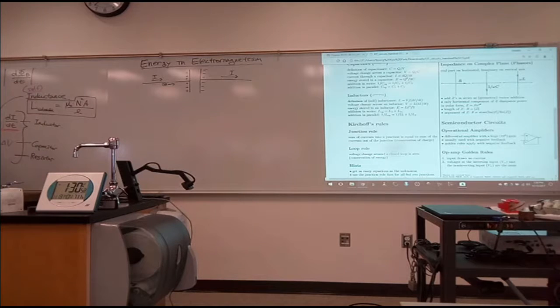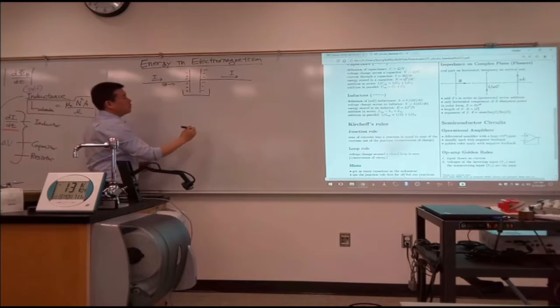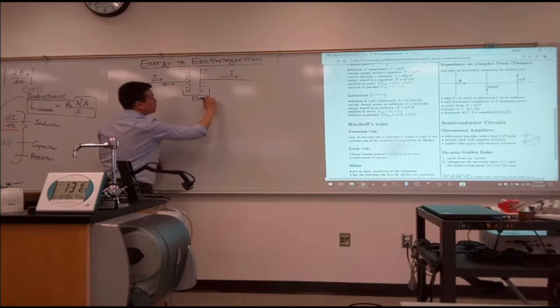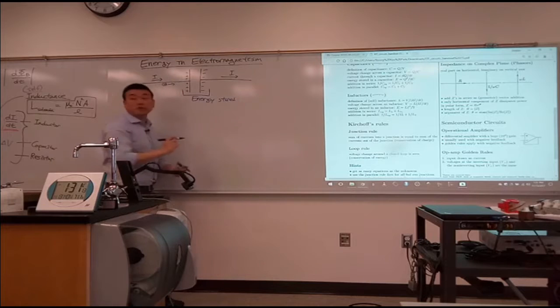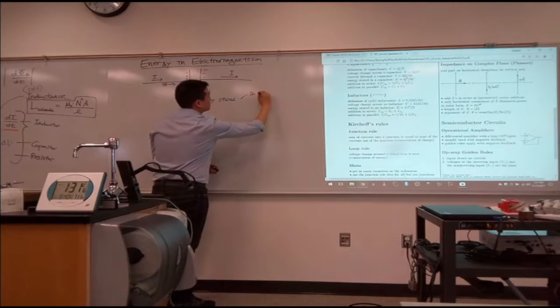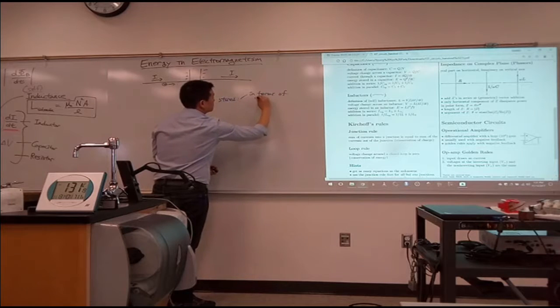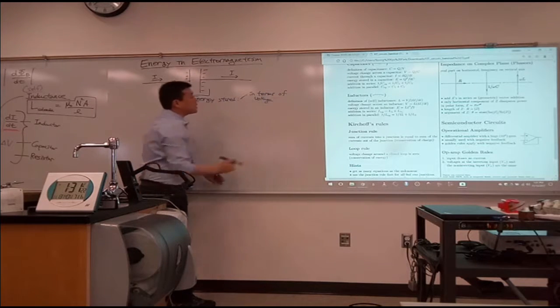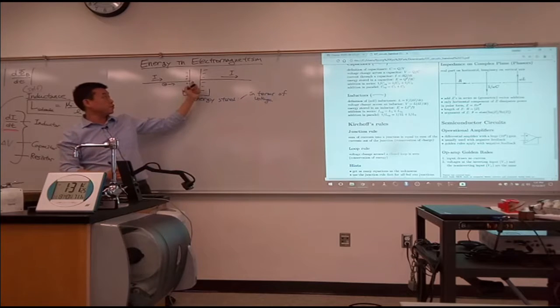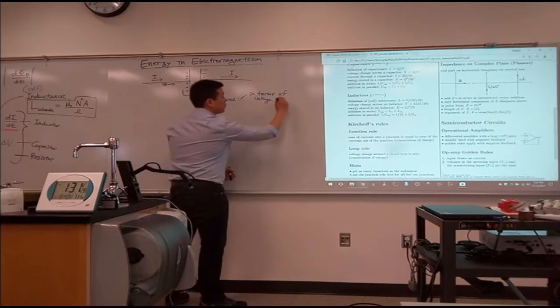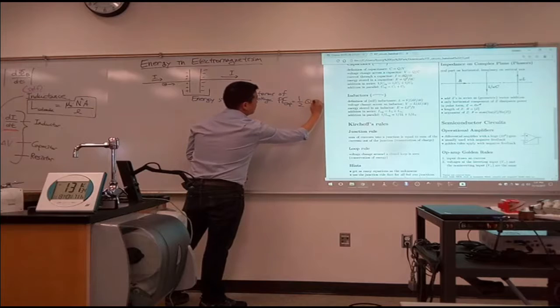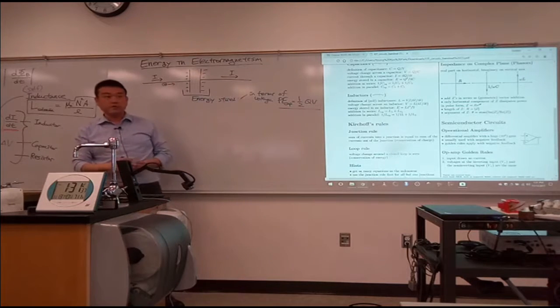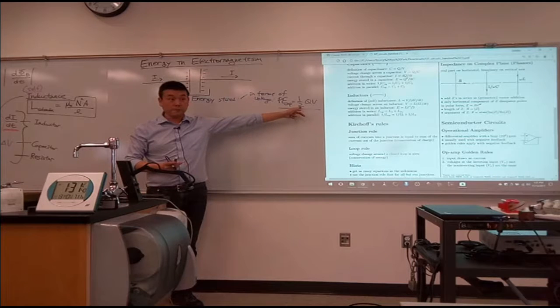And what we looked at last time is you could look at the energy stored here in terms of voltage. We took some time deriving this formula for energy stored on the capacitor in terms of voltage. The potential energy stored on the capacitor was one-half QV. And you can go back to your notes, figure out where this factor of one-half comes from.